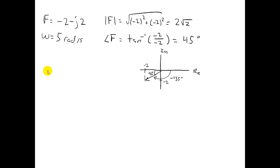So in exponential form, we can write the phasor of F as 2 root 2 e to the minus j 135 degrees.